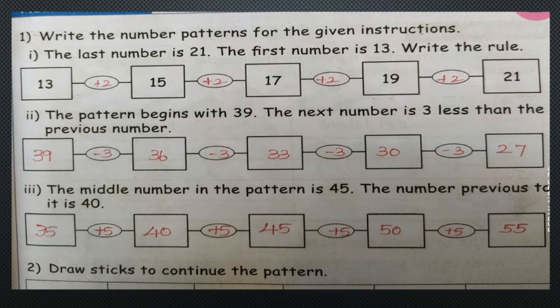Now we will see the third sum. The middle number in the pattern is 45 and the number previous to it is 40. The difference between 40 and 45 is plus 5. So the pattern is: 35 plus 5 is 40, 40 plus 5 is 45, 45 plus 5 is 50, and 50 plus 5 is 55.